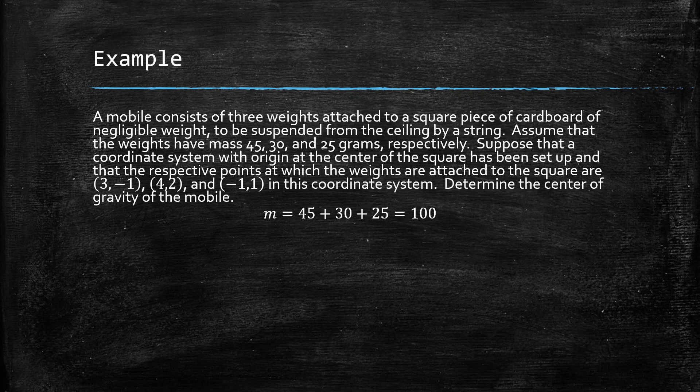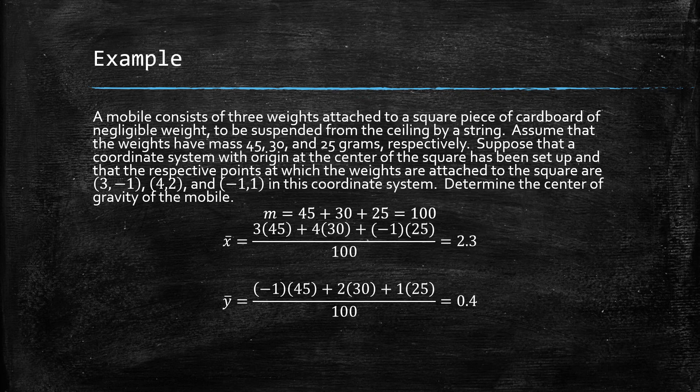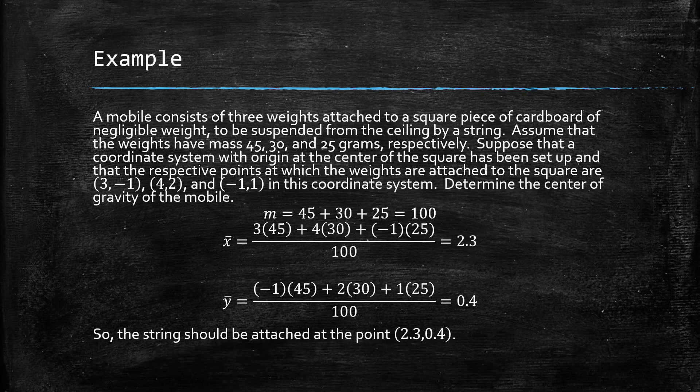First, finding the sum of the masses: m = 45 + 30 + 25 = 100. Next, finding the x-coordinate of the center of mass: x-bar = (3×45 + 4×30 + (-1)×25) / 100 = 2.3. The y-coordinate of the center of mass: y-bar = ((-1)×45 + 2×30 + 1×25) / 100 = 0.4. So the string should be attached at the point (2.3, 0.4). That way, the square piece of cardboard holding the mobile will be balanced.